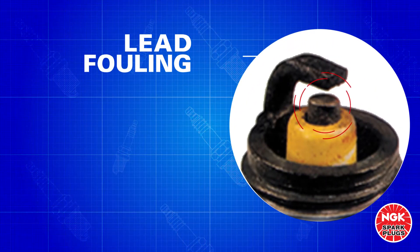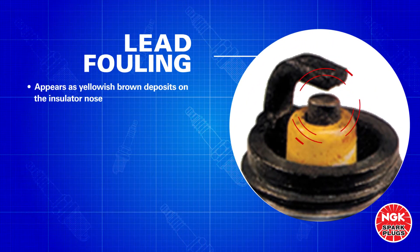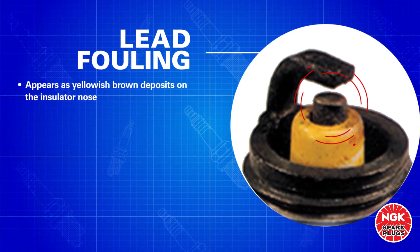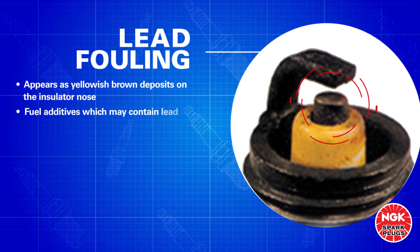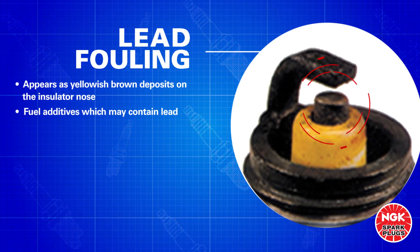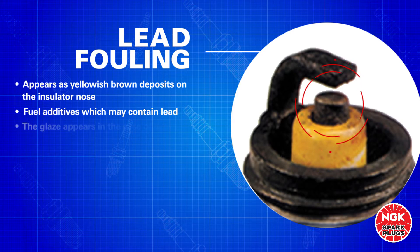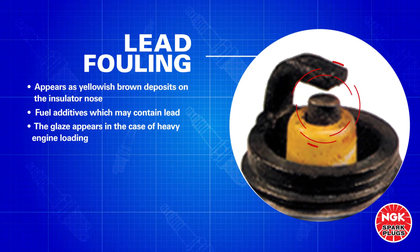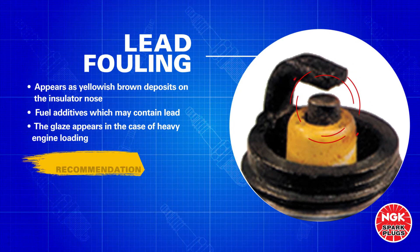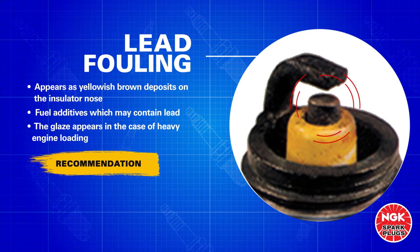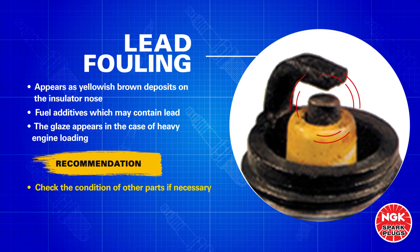Lead Fouling. Lead fouling usually appears as yellowish-brown deposits on the insulator nose. Fuel additives that may contain lead can cause the spark plug not to function properly. Avoid using fuel additives that can cause harm to the engine. Check the condition of other parts and replace if necessary, and replace the spark plugs.